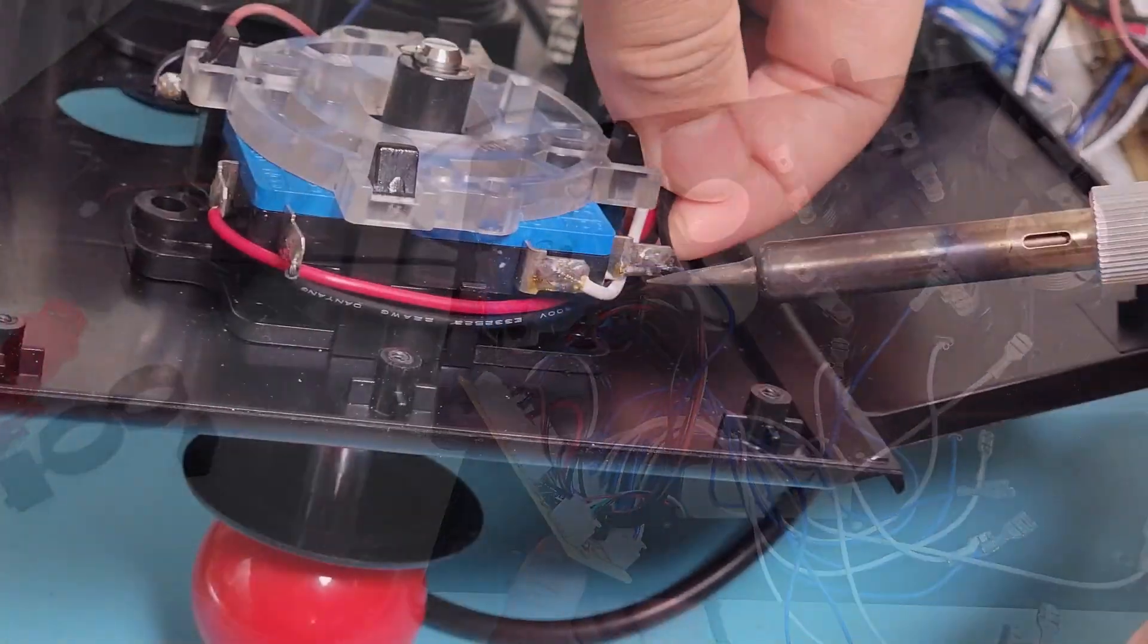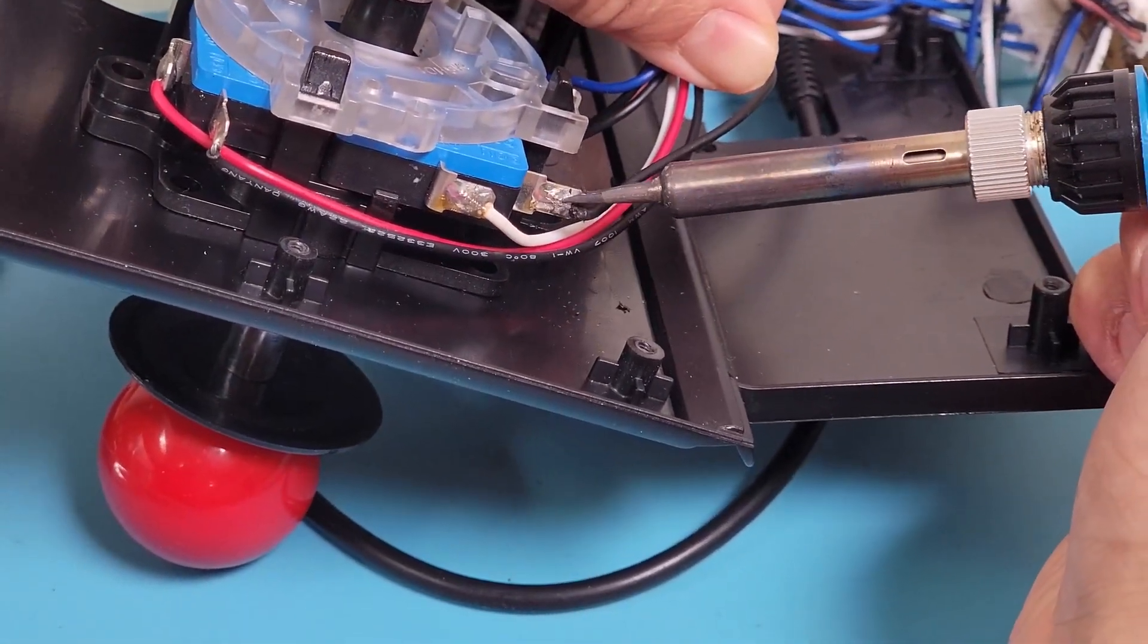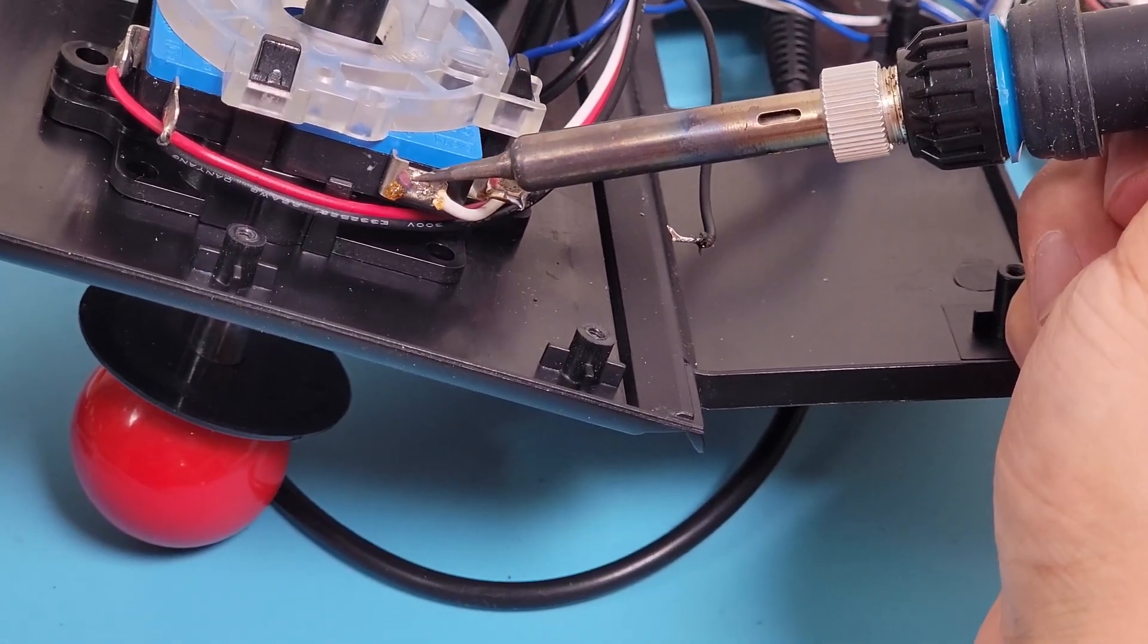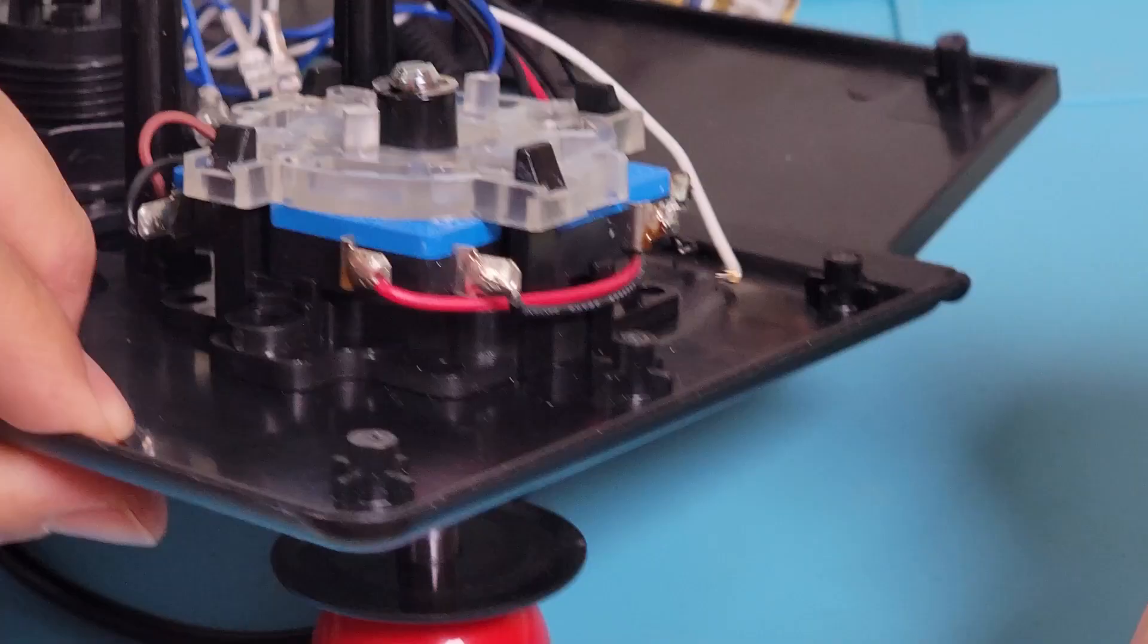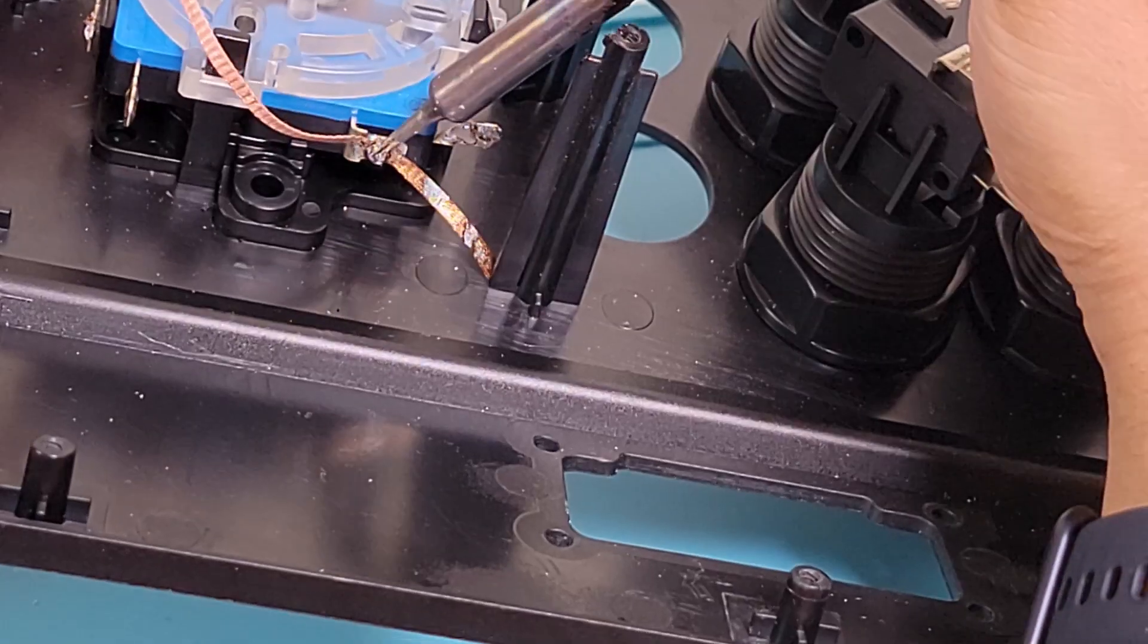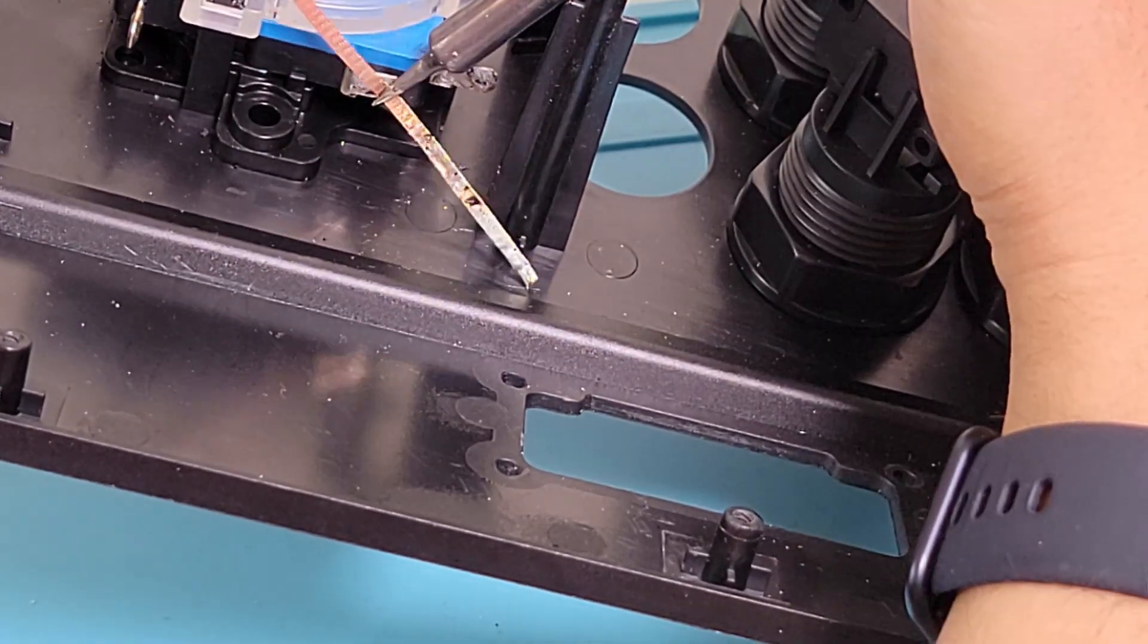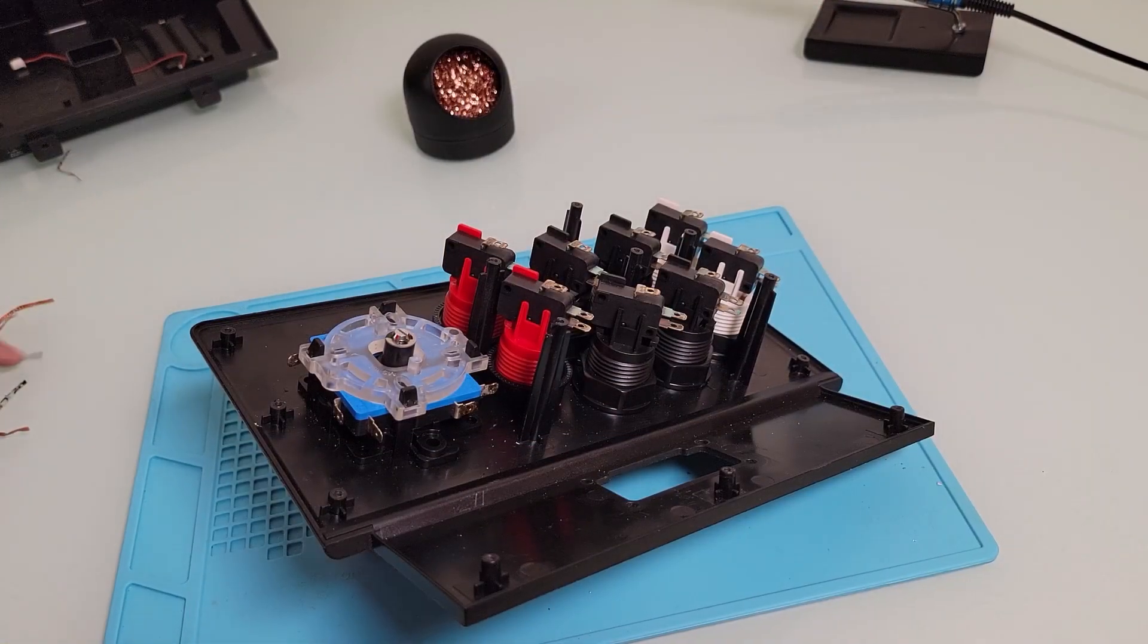Now it's time to start the desoldering process. After I'm done desoldering, I'll clean up any extra solder on the connectors by using some desoldering braids. And I'm done with getting all of the USB adapter cables off.